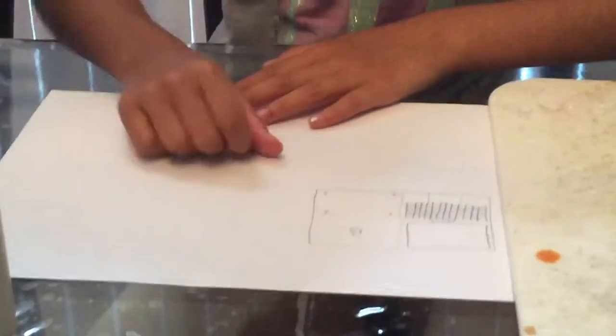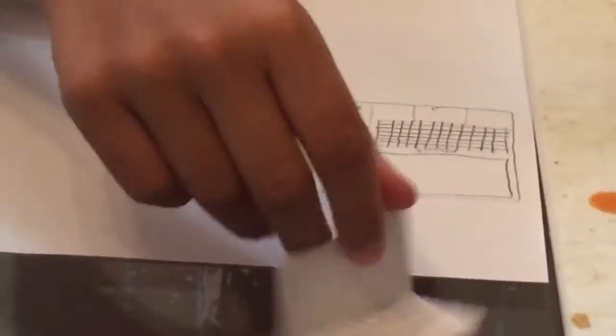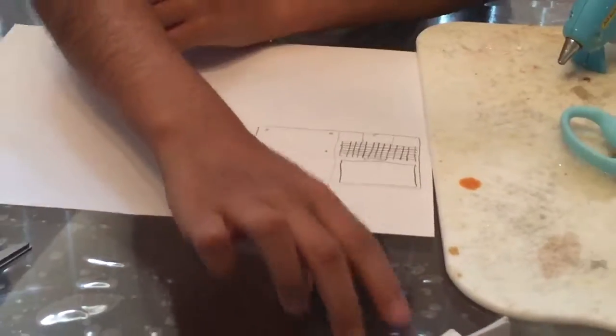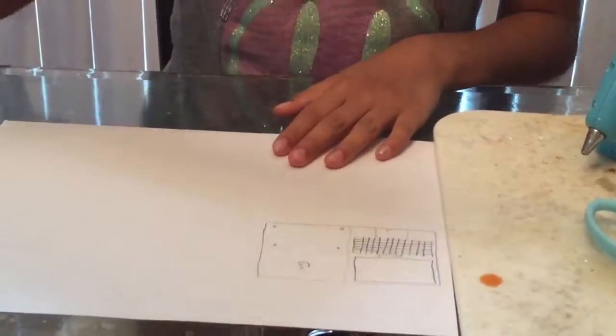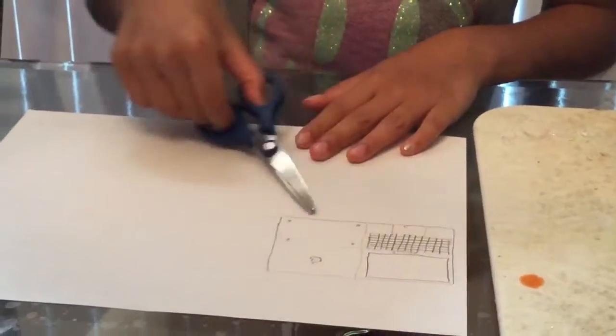To show you how it's going to look, I already did one so you guys can see without color. This is the back, so this is what we're going to be doing. Okay, let's start with cutting it and then pasting it on this blank piece.